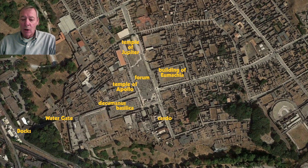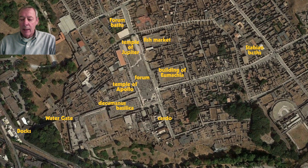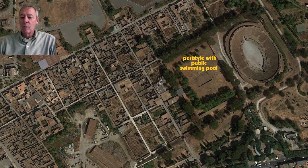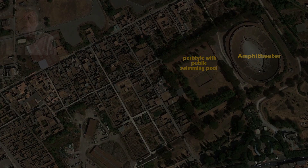The largest building in Pompeii is called the Building of Eumachia, an example of euergetism I discussed in an earlier lecture. Eumachia was a priestess of some importance in Pompeii, and as a wealthy woman of elevated position, she donated this large building to the city. Over here we have fish markets, forum baths, Stabian baths, a theater in the southeast section, and leading out to the main public venue for gladiator combats—the amphitheater—with a large public park and swimming pool right next to it.